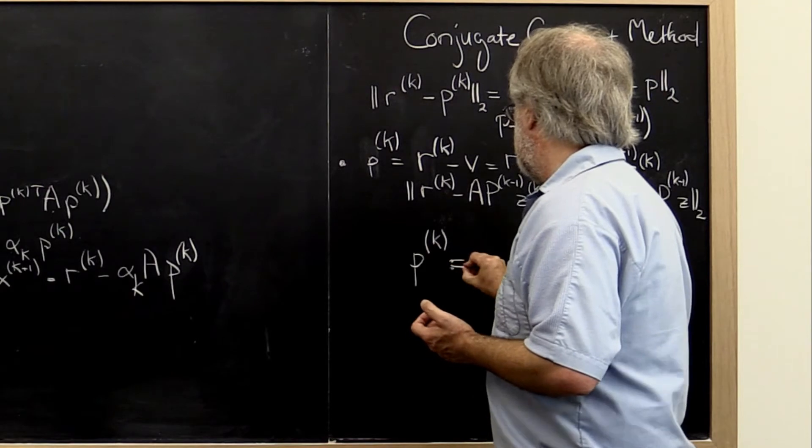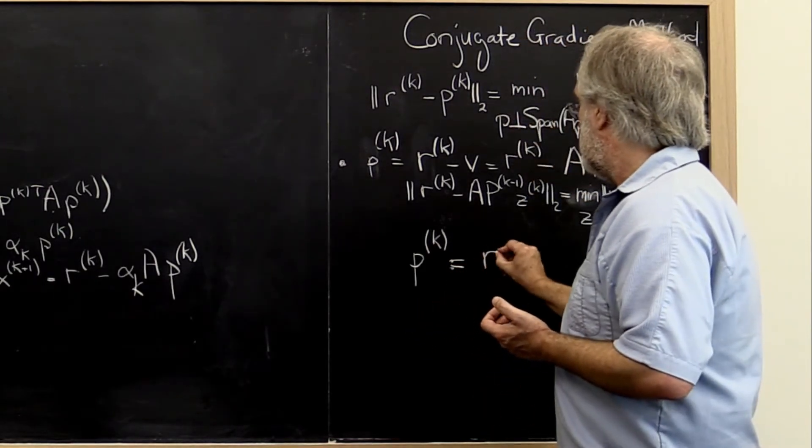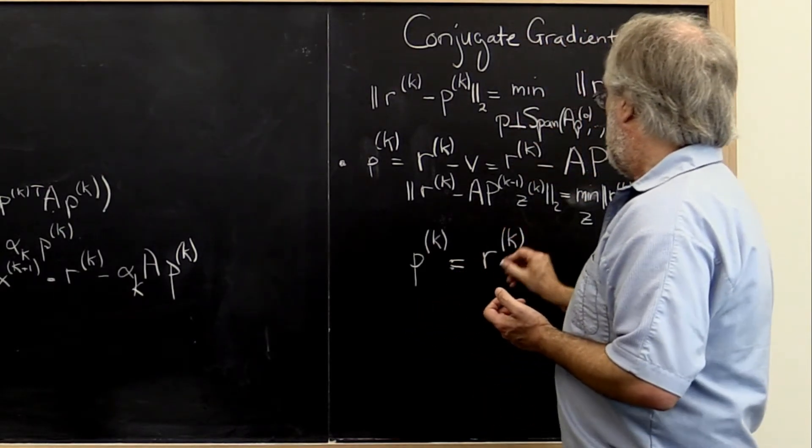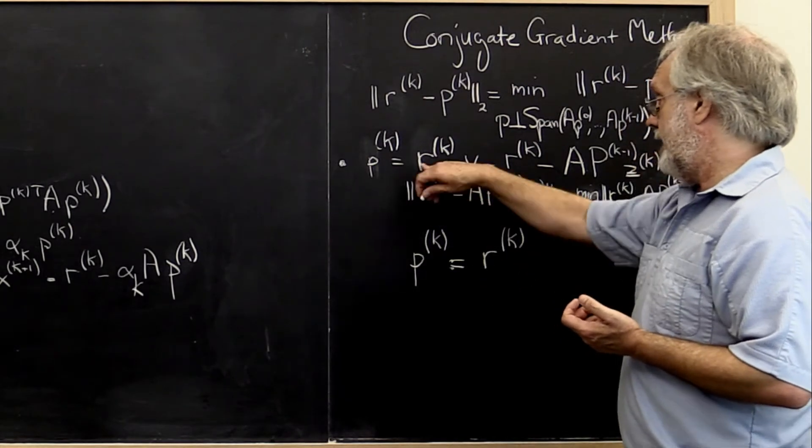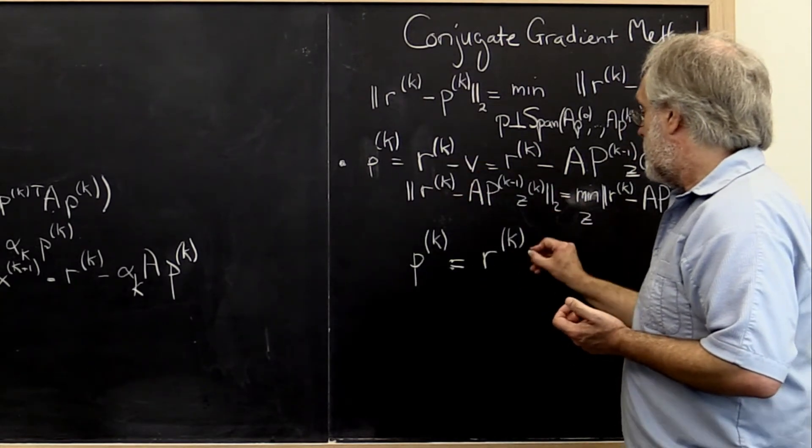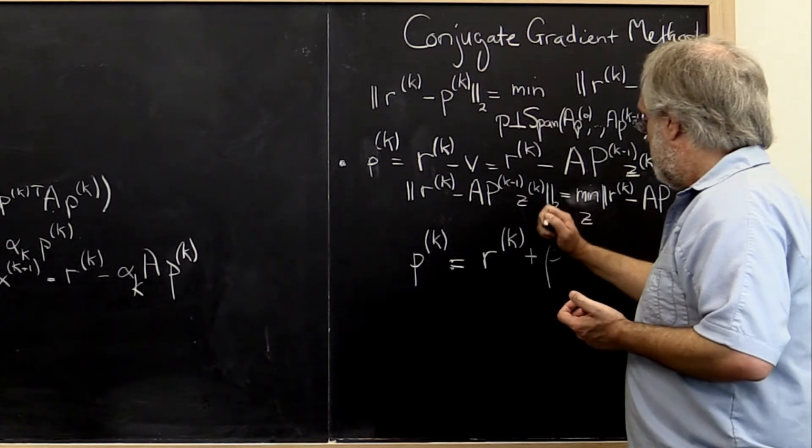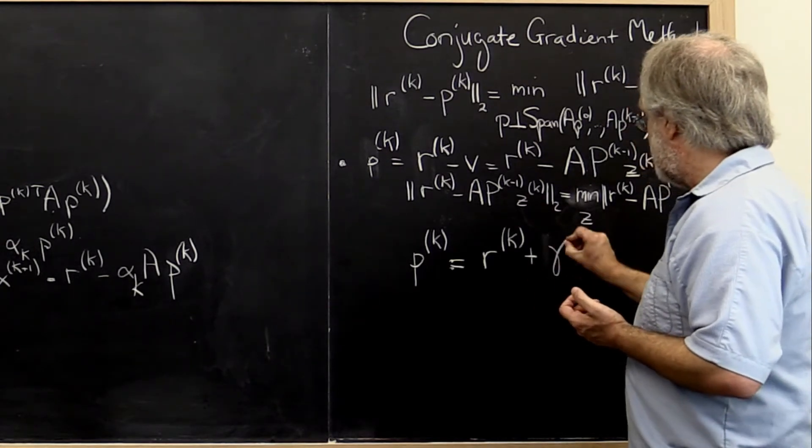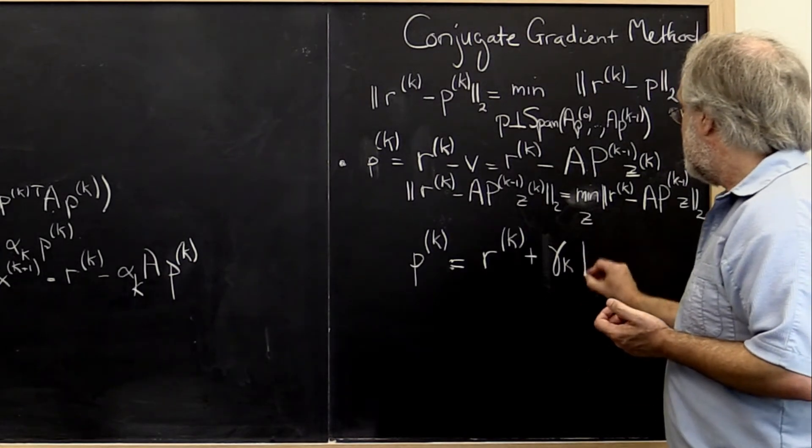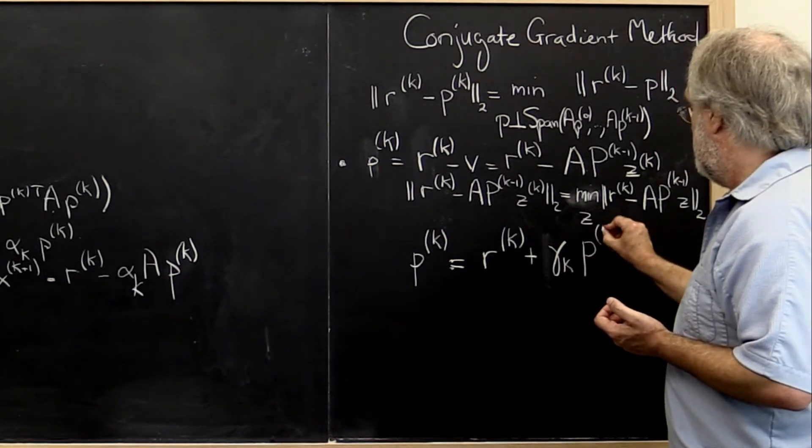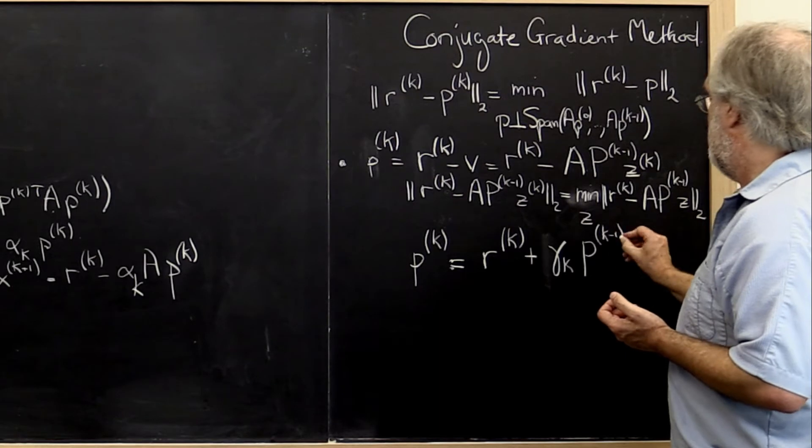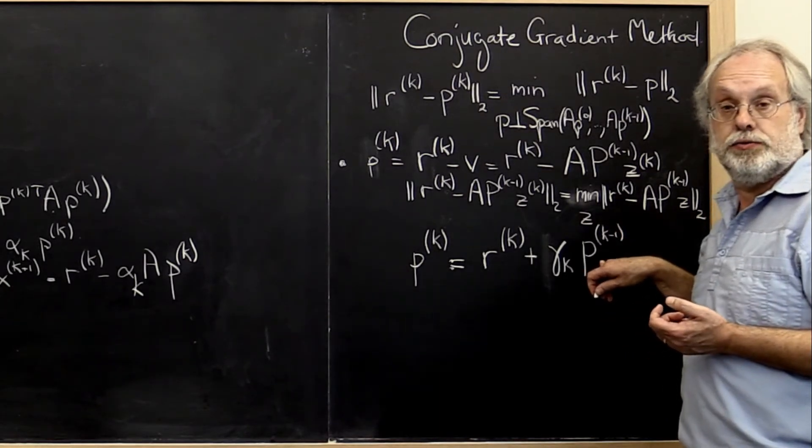be chosen to be a linear combination of the residual, well we had that already, plus some multiple, let's call it gamma sub k times the previous search direction.